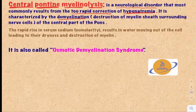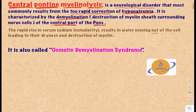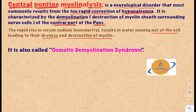It's characterized by demyelination, which means the destruction of the myelin sheath surrounding the nerve cells of the central part of the pons, and that's why it's called central pontine. The rapid rise in serum sodium following the correction results in water moving out of the cell, and this leads to dryness and destruction of myelin. Usually the water follows the higher osmolarity, so when we correct the serum sodium to a higher osmolarity, the water follows that osmolarity, and that leads to dryness of the cell and destruction of myelin.